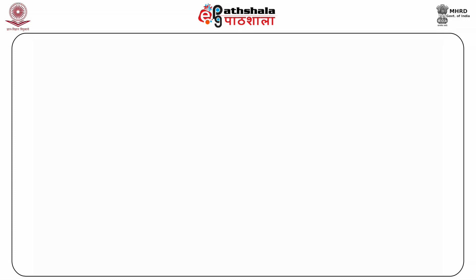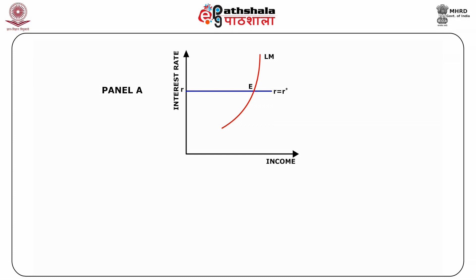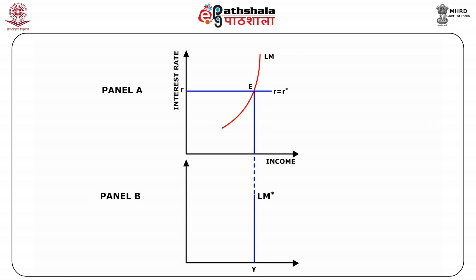The LM star curve is derived using the LM curve. Consider panel A, which shows the upward sloping usual LM curve. As R equals R star, point E becomes the relevant point in the LM star. Panel B shows the LM star curve, which is a vertical straight line measuring exchange rate on the Y axis and income level on the X axis. This is because the exchange rate does not enter into the LM star. Given the world interest rate R star, the LM star schedule determines the aggregate income.